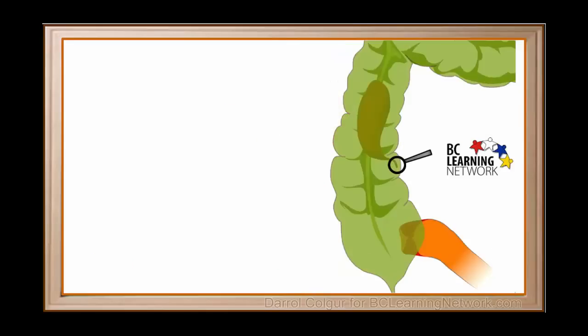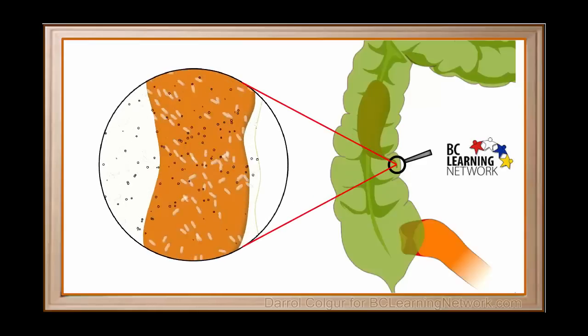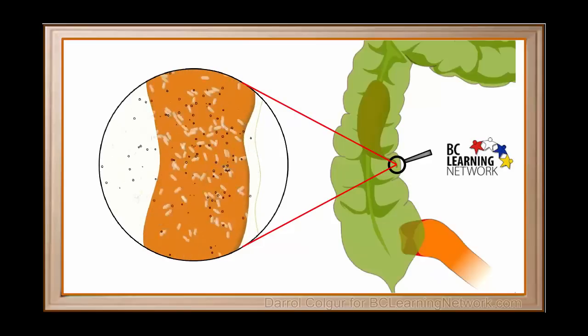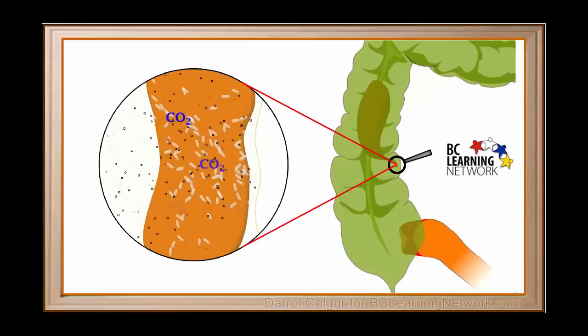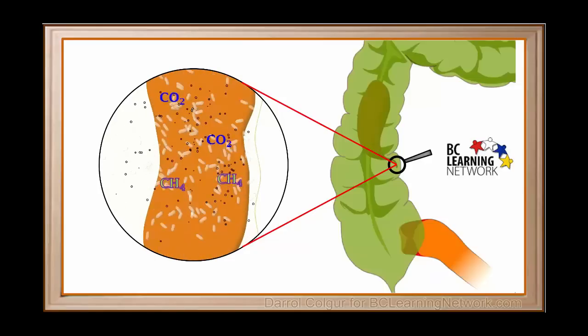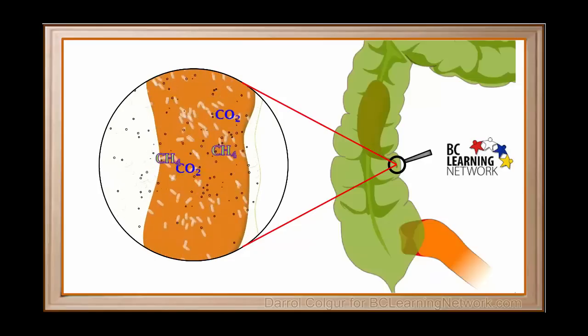We'll take a closer look at this area again. As well as producing vitamins, bacteria in the large intestine carry out fermentation, which produces gases. The main gases produced by bacteria are carbon dioxide, or CO2, and methane, or CH4.